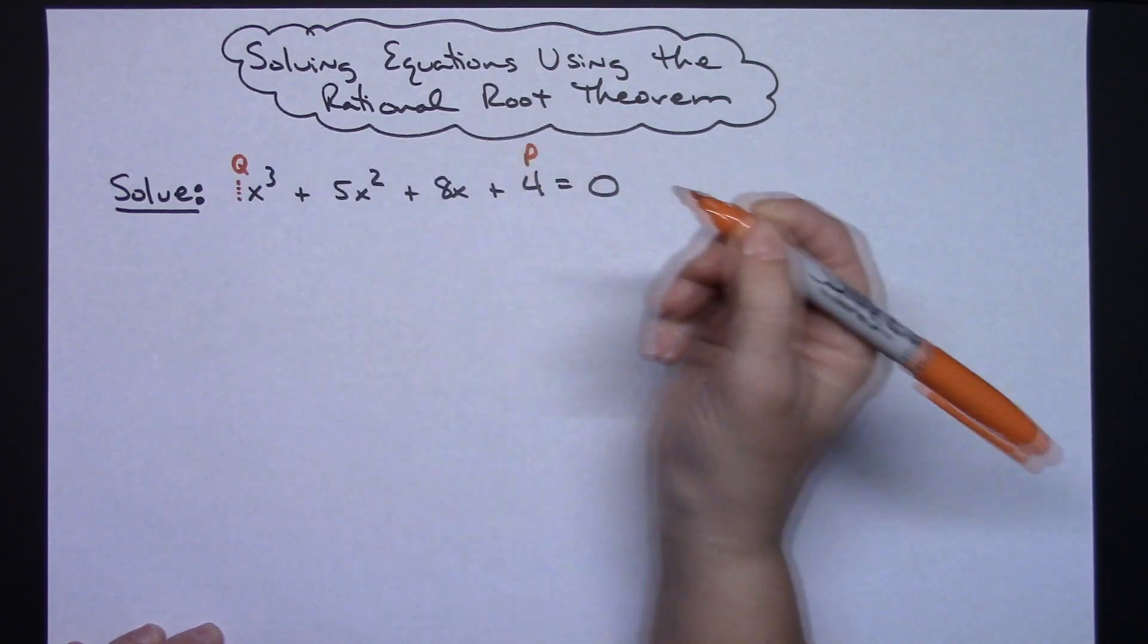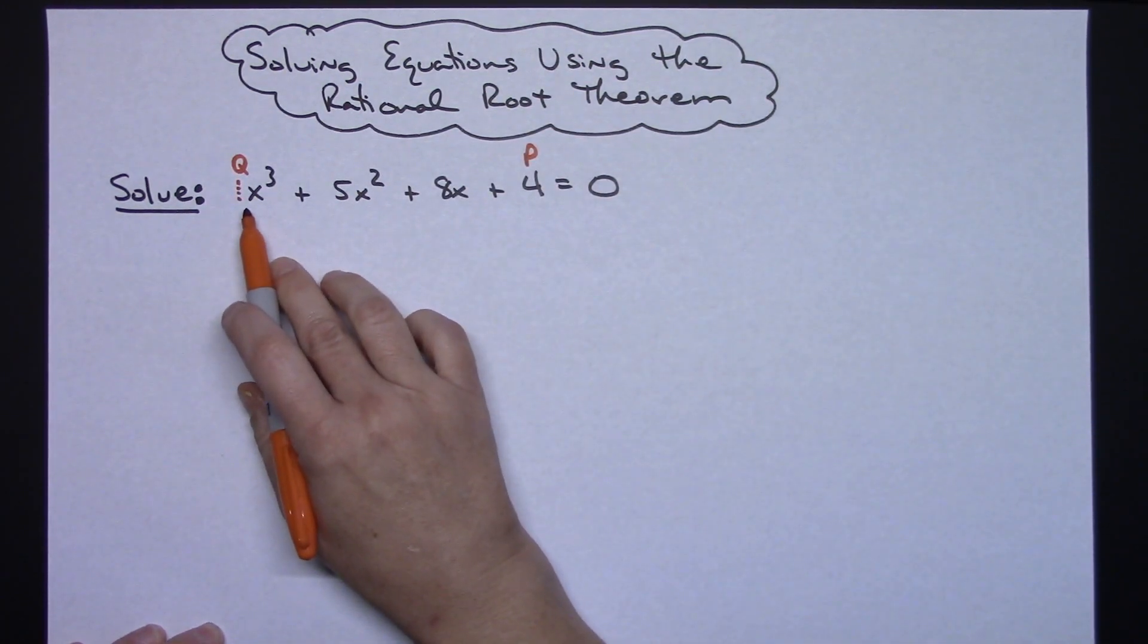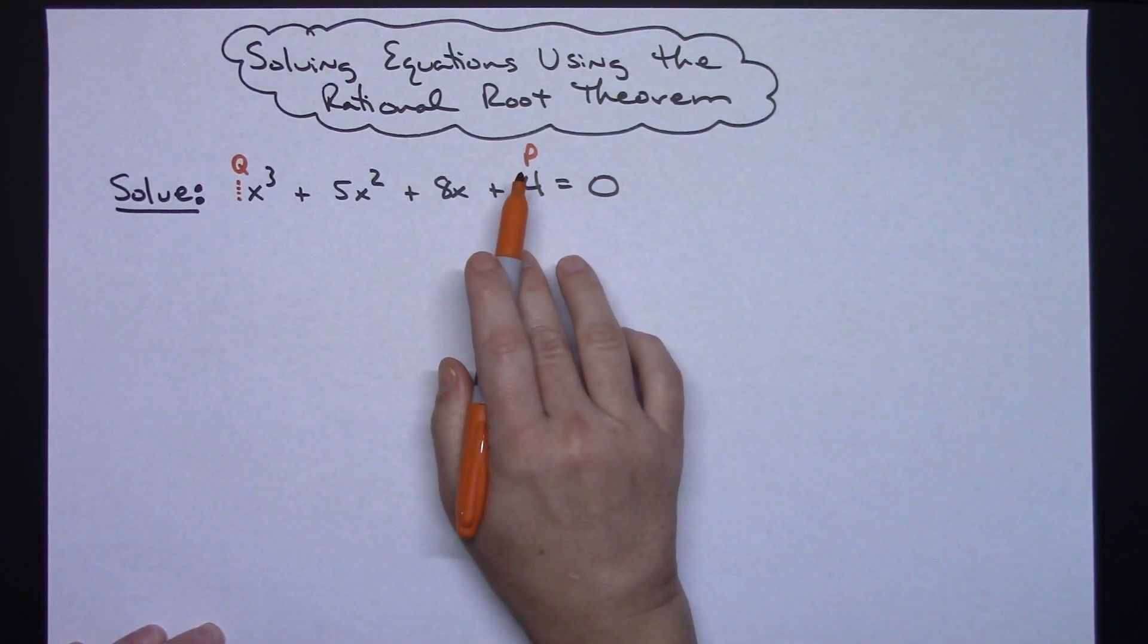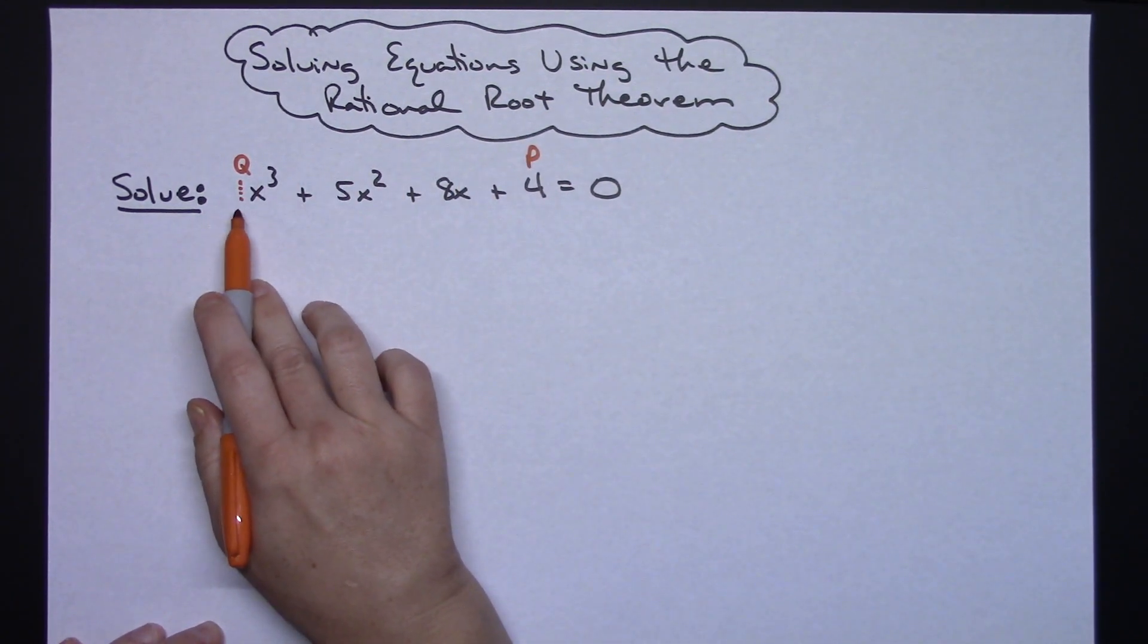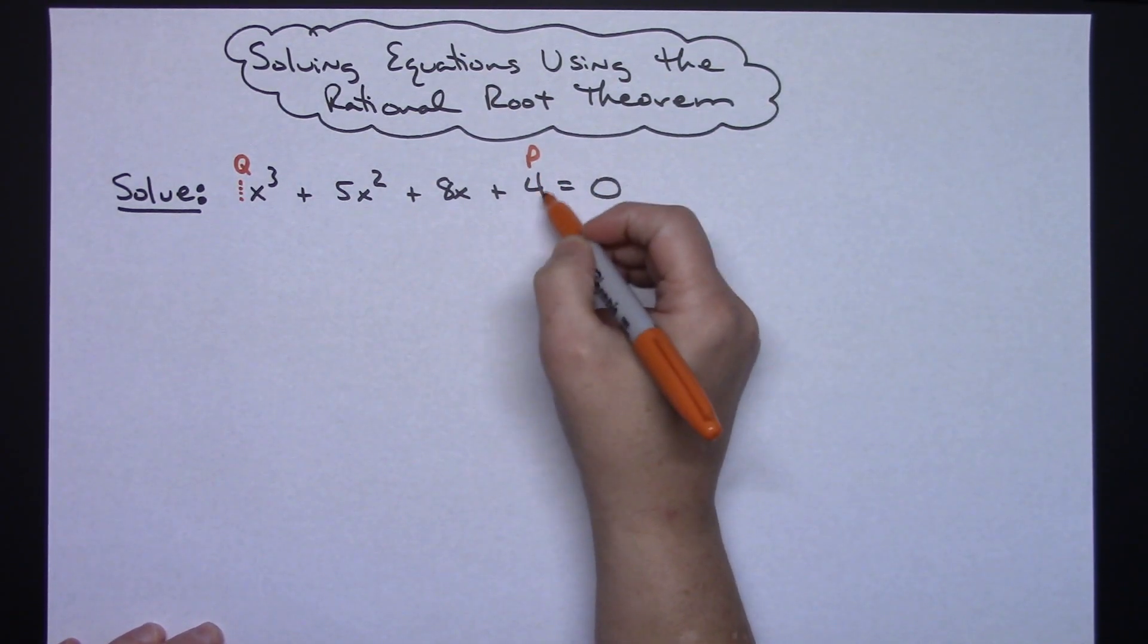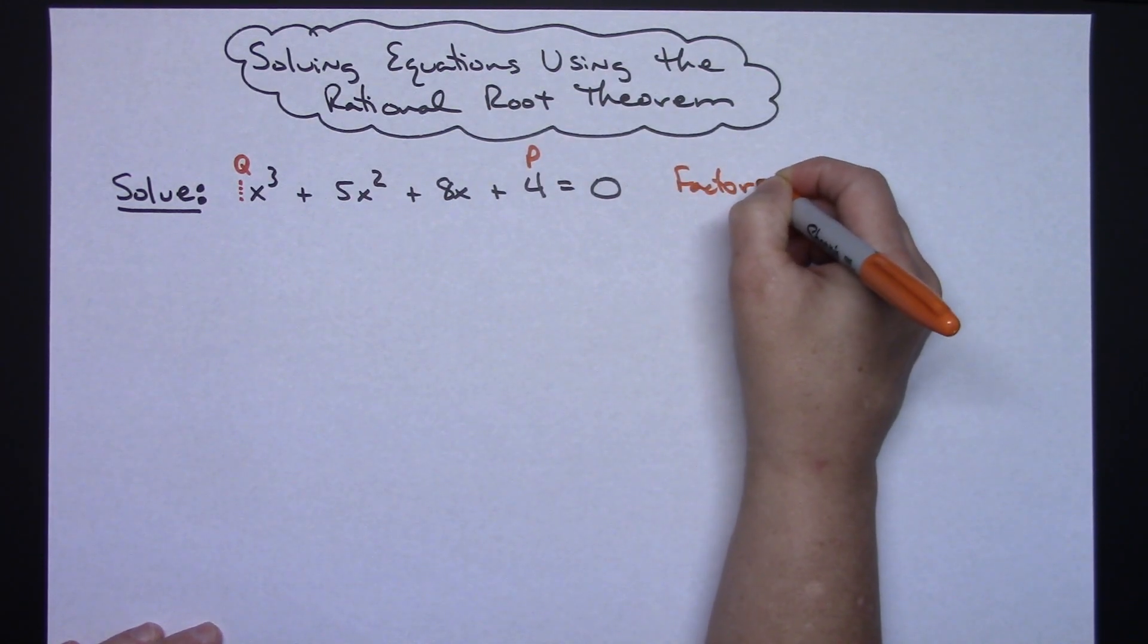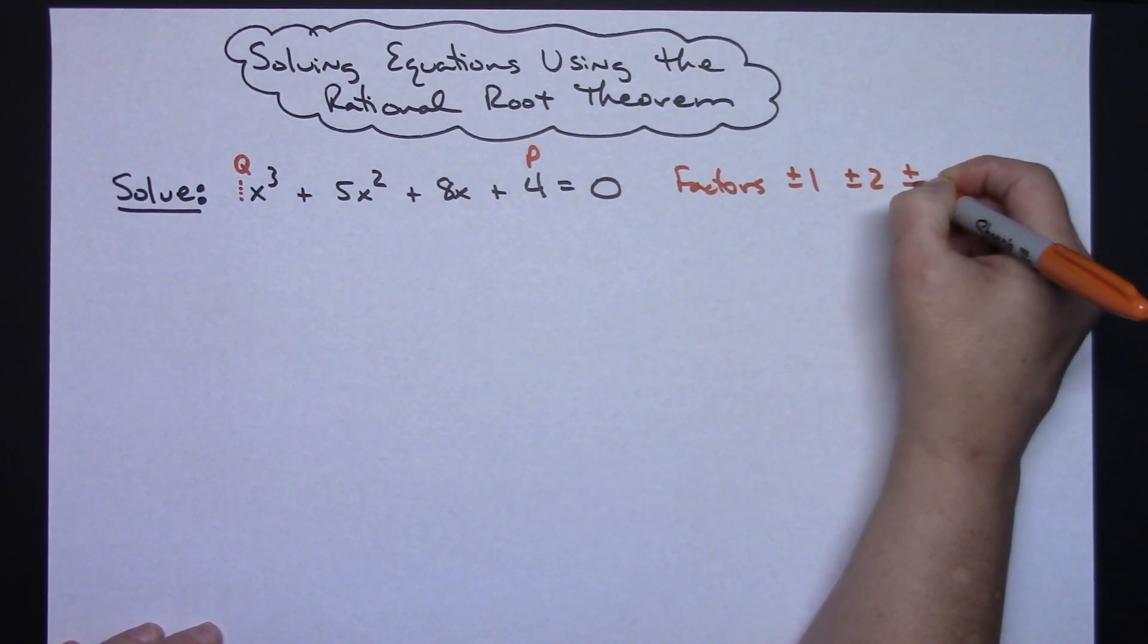Now in this example my q is a 1. And if there's a 1 leading coefficient right there then it makes it really simple because p over q, all your factors of 4 over all your factors of q, well with that being a 1 then we don't really need to deal with that at all. So really in this case on the 4 here, the only factors that we are needing to deal with would be plus or minus 1, plus or minus 2, plus or minus 4.